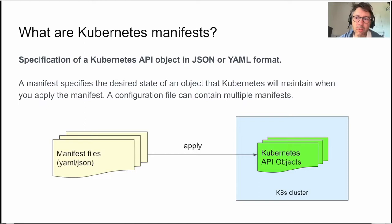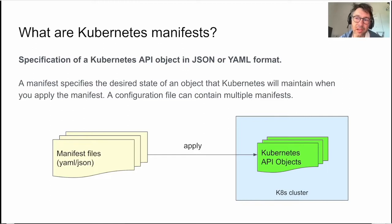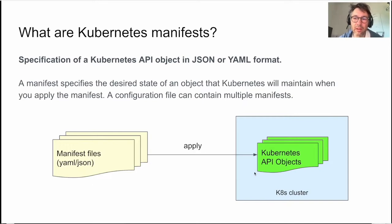What are Kubernetes manifests? Manifests are specifications of Kubernetes objects in JSON or YAML format. I'm sure you've all seen those YAML files that describe an object that Kubernetes is going to manage for you once you deploy your manifest. Usually it's one object defined per manifest file, but you can define as many objects as you want. Once you have your files, you can manage them and then apply them to Kubernetes.